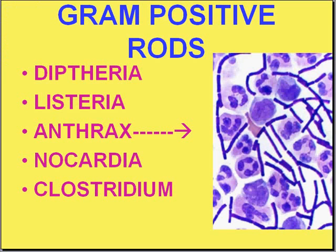Now let's talk about rods, or bacilli. It's easy to classify the gram-positive bacilli because there are only relatively few of them. Almost all other rods or bacilli are gram-negative, so the term gram-negative rod is almost redundant. There are a few diseases — diphtheria, listeria, anthrax, nocardia, and clostridium — which are caused by gram-positive rods.